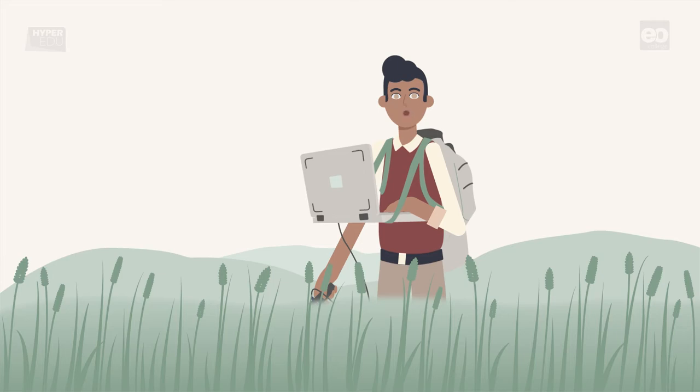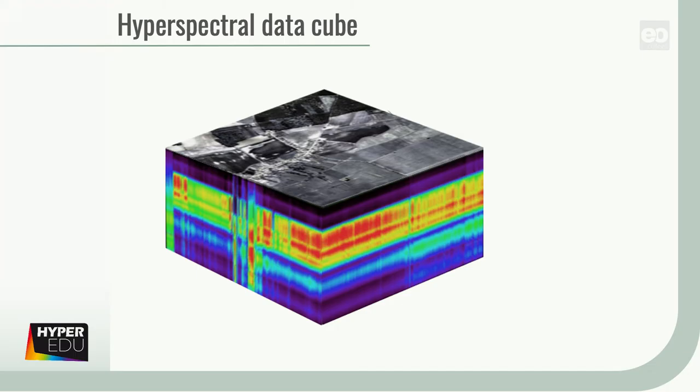Therefore, it is important to use a well-defined and calibrated sensor system. After preprocessing of the acquired data, each pixel can be represented as an integration over a relatively small volume element in a continuous 3D data cube.